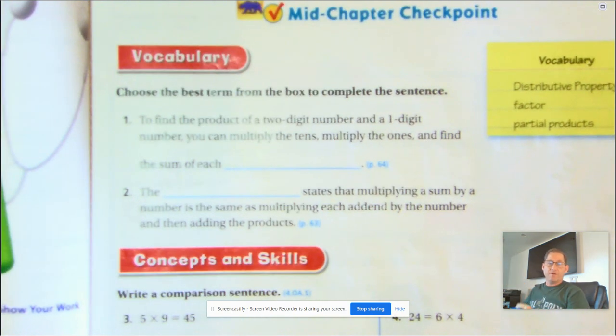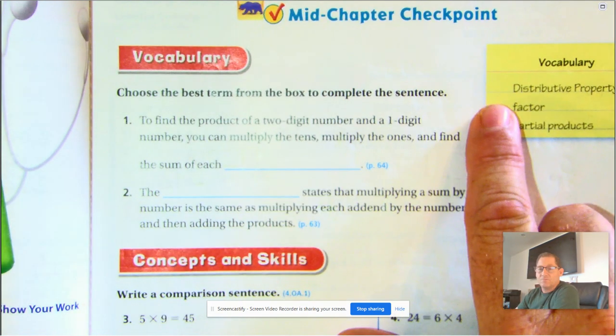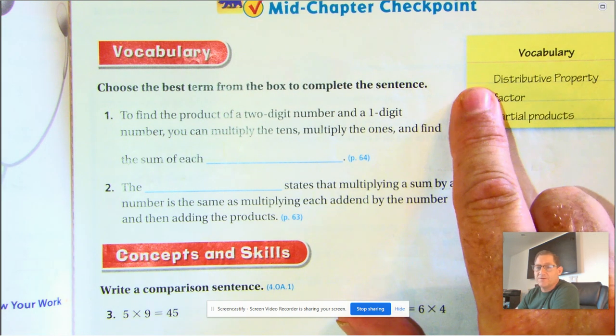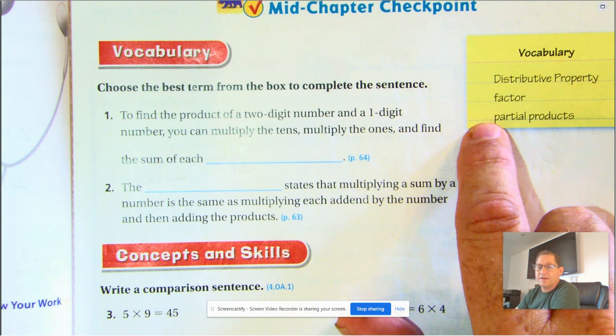Okay. And the first section of our review is vocabulary, and we need to know these three terms: distributive property, factor, and partial products.